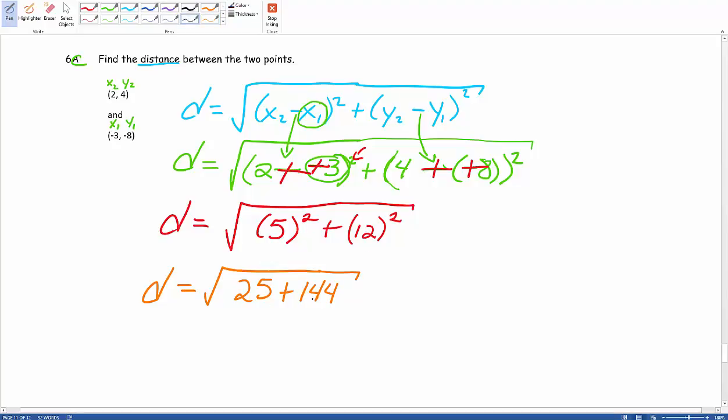And then when we go ahead and add these two together, we end up with our distance is equal to the square root of 169, which actually comes out to be a clean number, in this case 13.